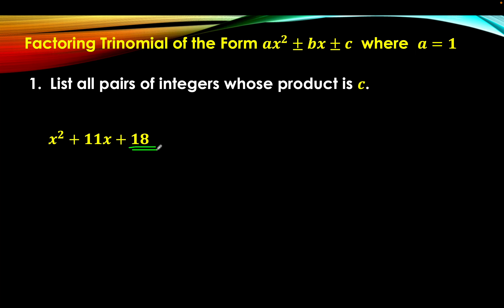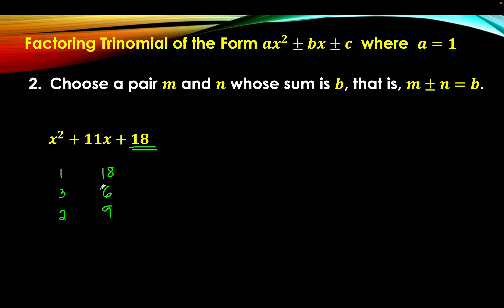That means we're going to look for two integers whose product is 18. The possible pairs are 1 and 18, another one is 3 and 6, and the last one is 2 and 9. These are the pairs of integers whose product is 18. After this, we proceed to step 2: we're going to choose a pair m and n whose sum is b, that is, m plus or minus n is equal to b.